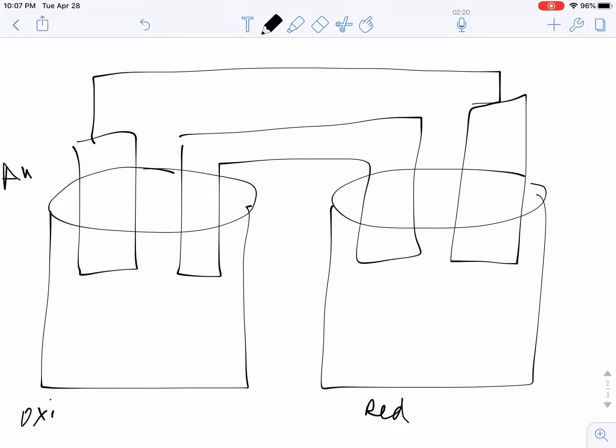So this is going to be the anode, this is going to be the cathode. Electrons always flow from anode to cathode.